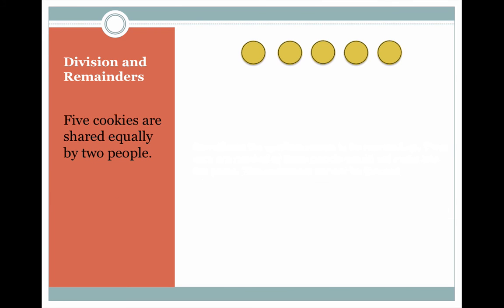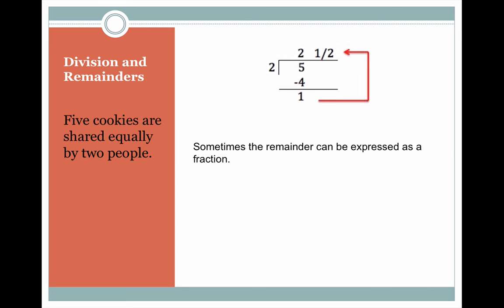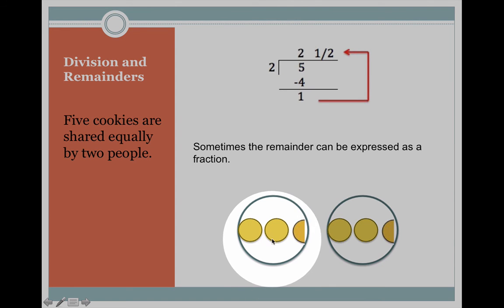Here's another example. Five cookies are shared equally by two people. The key word there being equally. This is a case where the remainder can be expressed as a fraction. Five cookies. Each person gets two whole cookies and one half of a cookie. You take the remainder, move it to the top and put it over the divisor to make a fraction. The divisor becomes the denominator or bottom number in the fraction.